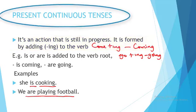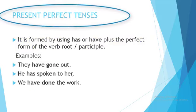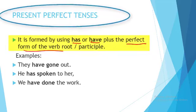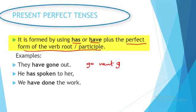Then we have the present perfect tense. You form the present perfect tense by using the present tense of 'has' or 'have' with the past participle of the verb. For instance, 'go' — went — and the past participle is 'gone.' 'Speak' — spoke — past participle is 'spoken.'